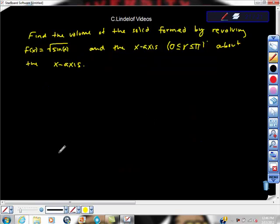Let's go ahead and do a problem. It says find the volume of the solid formed by revolving f(x) equals square root of sin(x) and the x-axis, where x is greater than or equal to 0 and less than or equal to π, about the x-axis.